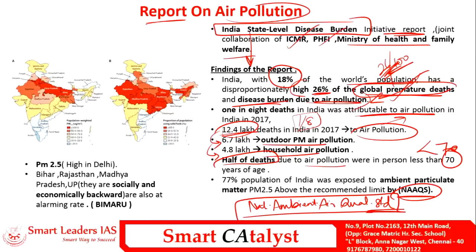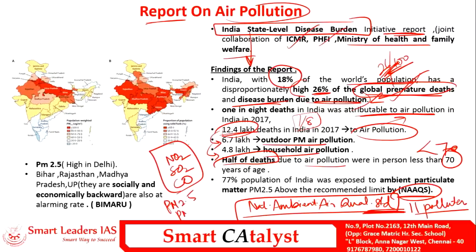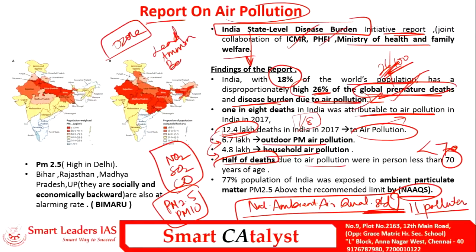The National Ambient Air Quality Standard (NAAQS) takes 11 pollutants into account: nitrogen dioxide, sulfur dioxide, carbon monoxide, particulate matter 2.5 and 10, ozone, lead, ammonia, benzene, arsenic, and nickel. Standards are fixed for these but the major concern is that nearly 77 percent of our country's population is exposed to levels above the prescribed limit. Particulate matter 2.5 is worst in Delhi, and the BIMARU states — Bihar, Madhya Pradesh, Rajasthan, Uttar Pradesh — already socially and economically backward, have the worst air quality.